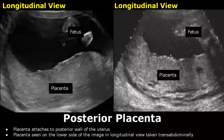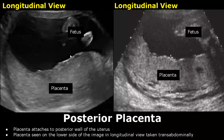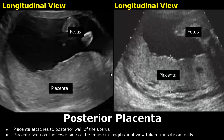In a posterior placenta, the placenta attaches to the posterior wall of the uterus. The placenta will be seen in the lower half of the image in longitudinal view taken transabdominally.